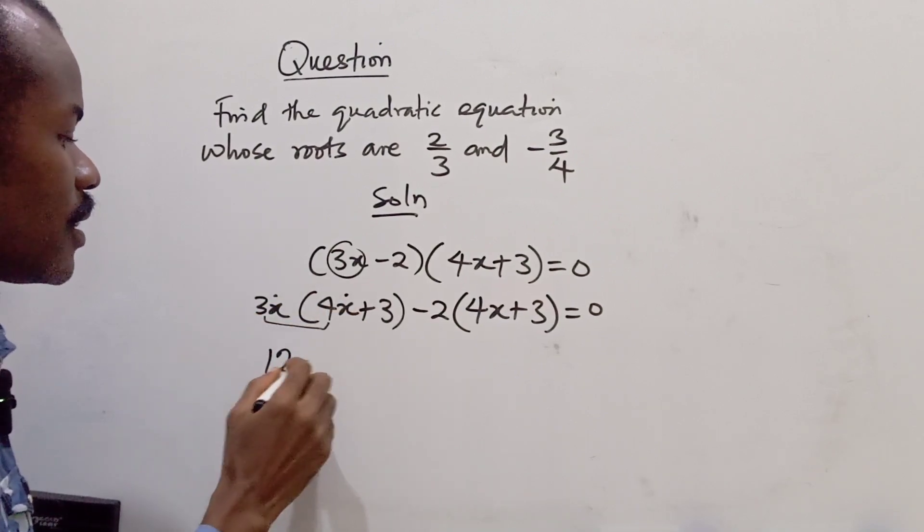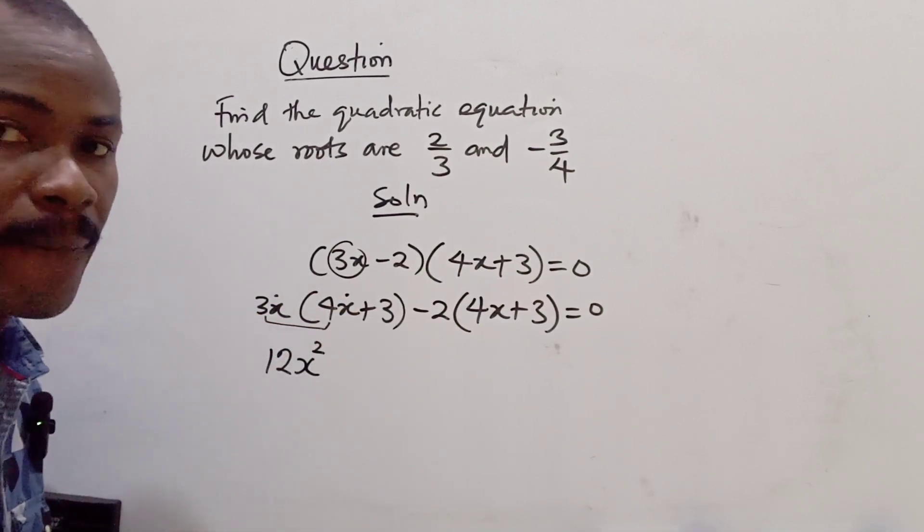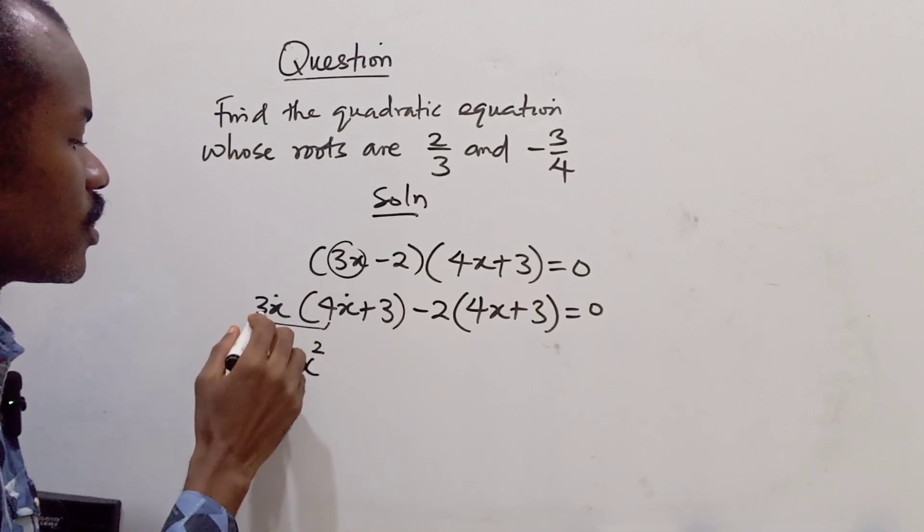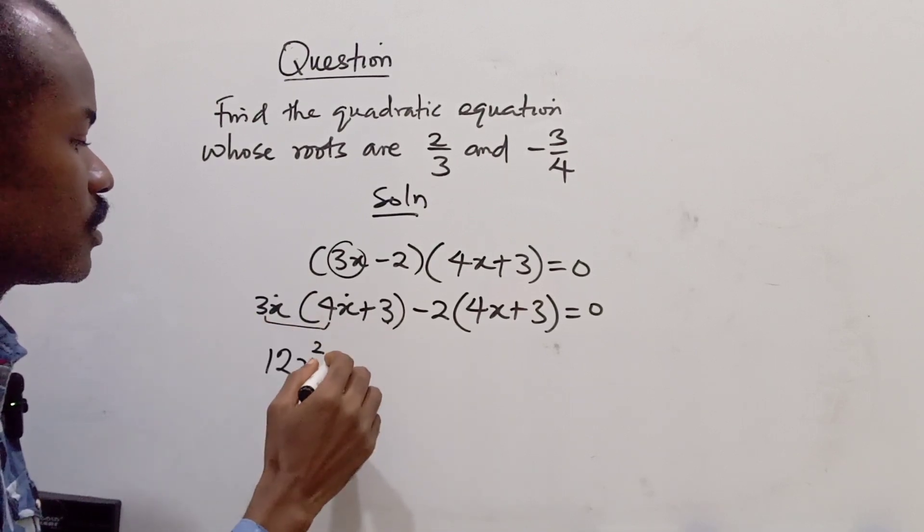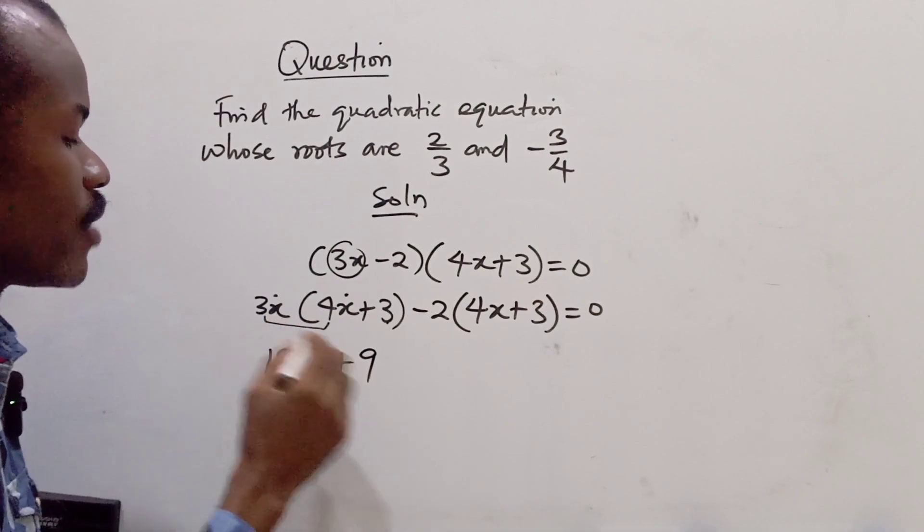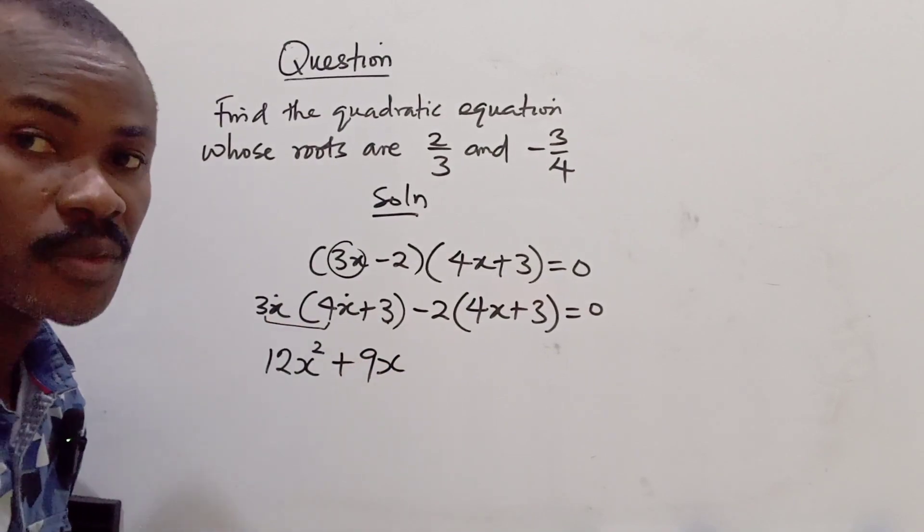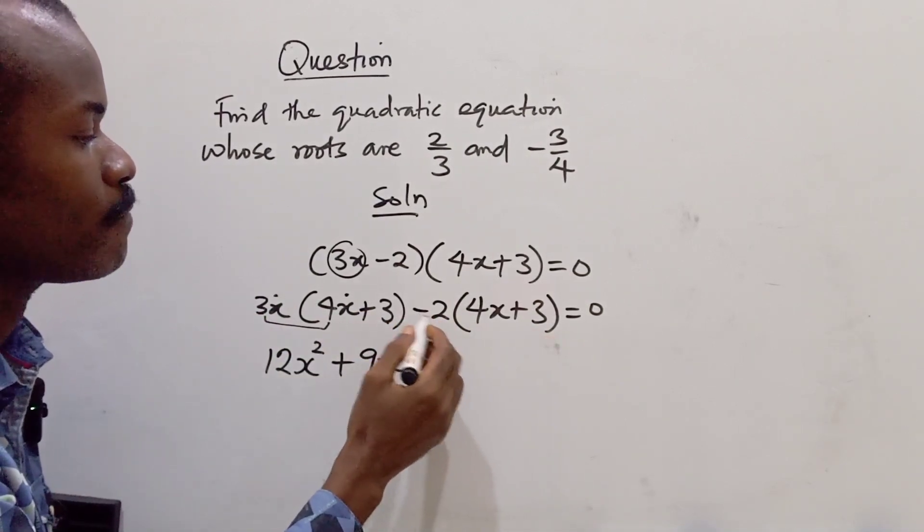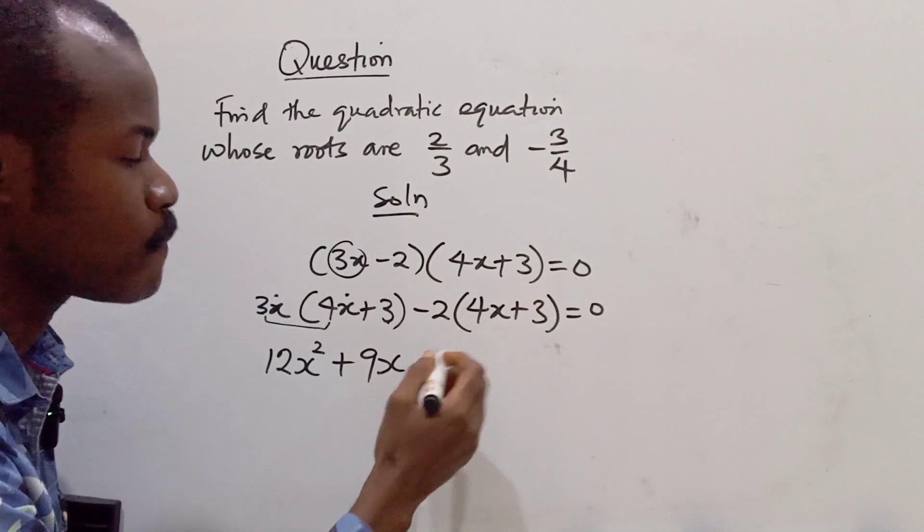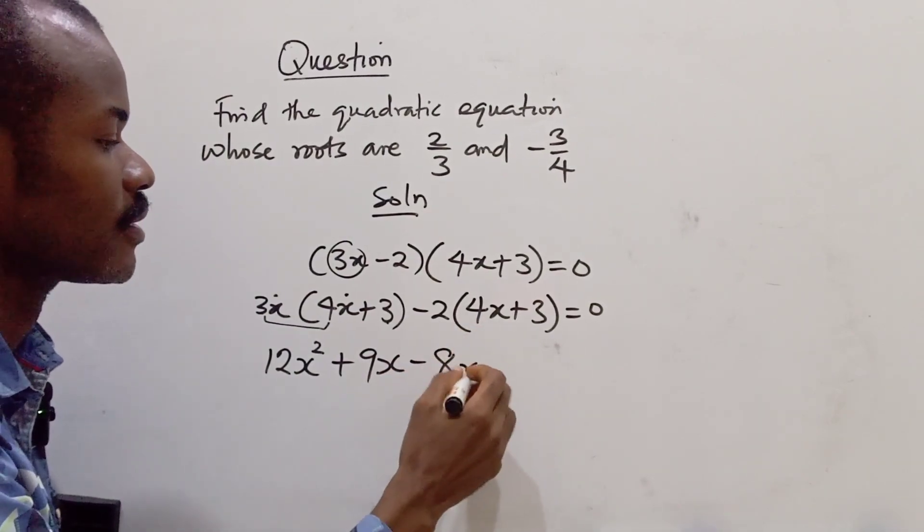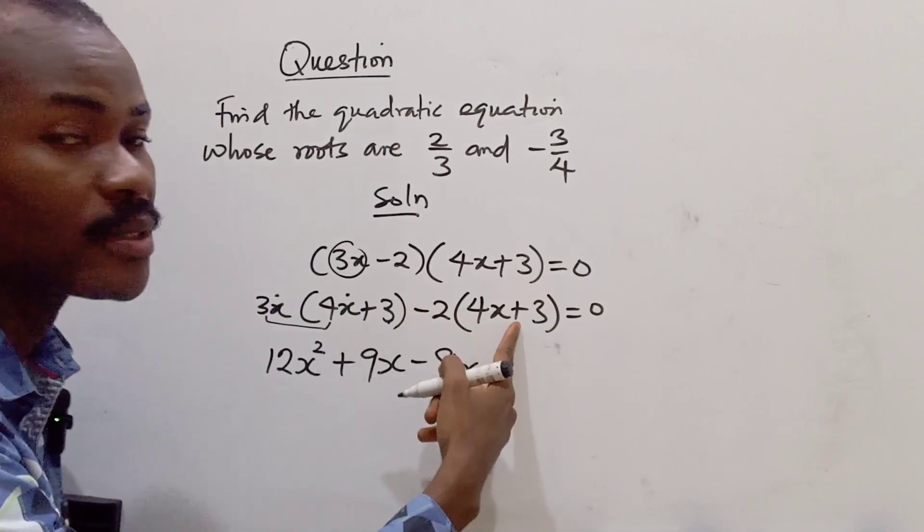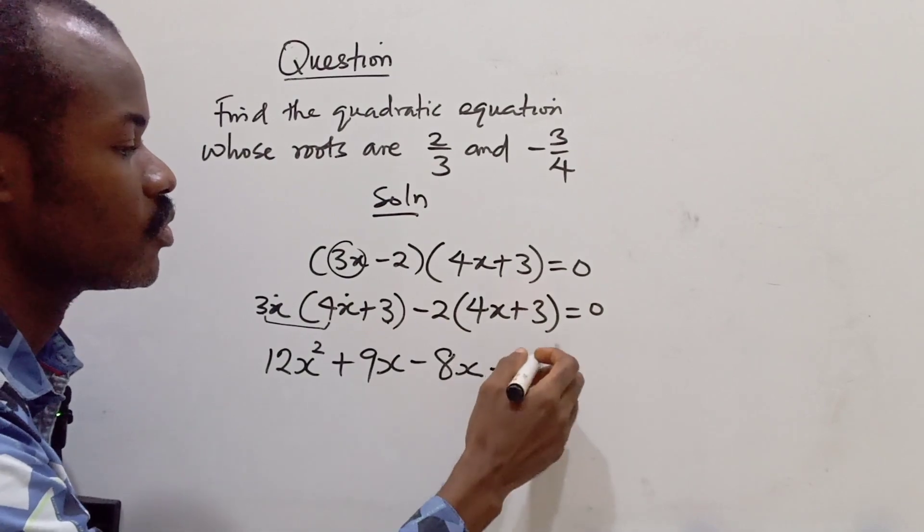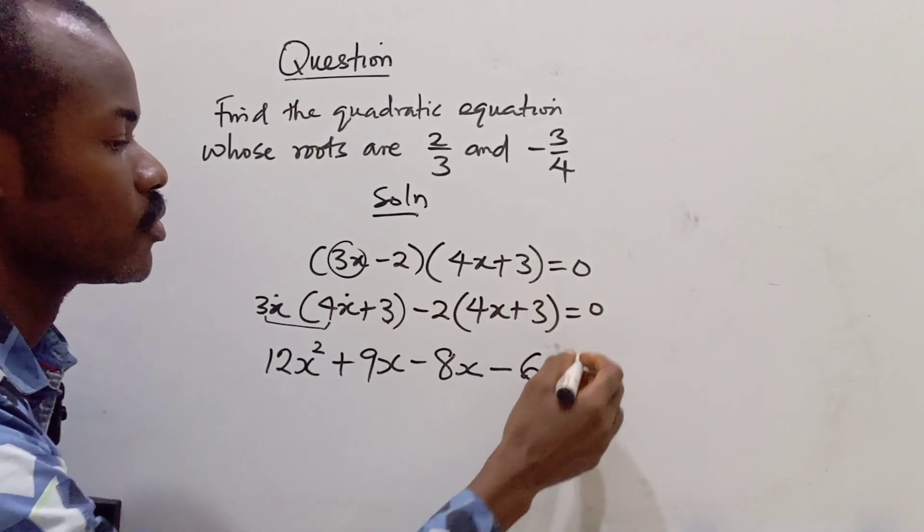Now we have 3x multiply 3. So 3 times 3 is 9, and we have x. So we are done with this bracket. Now we work on this. We have -2 times 4x, that will give us -8x. Minus times plus gives us minus. 2 times 3 is 6, which equals 0. So we have 12x² + 9x - 8x - 6 = 0.